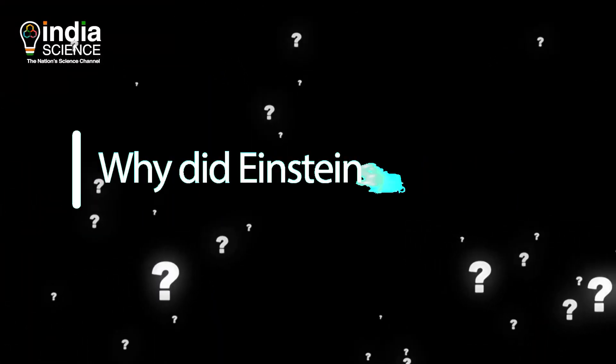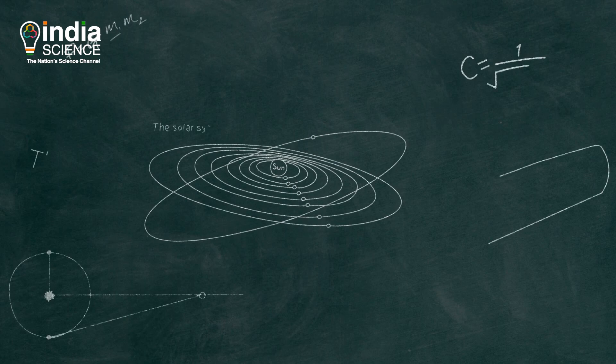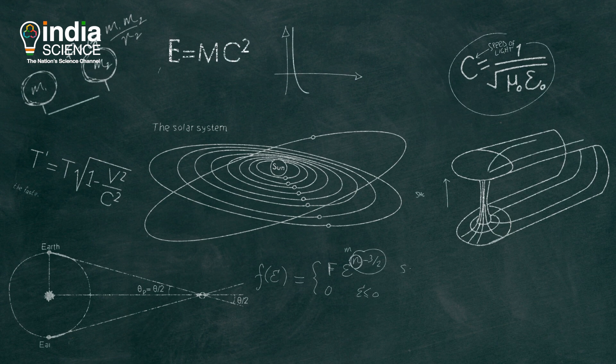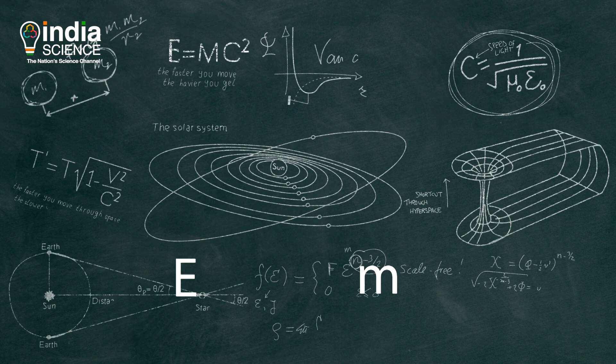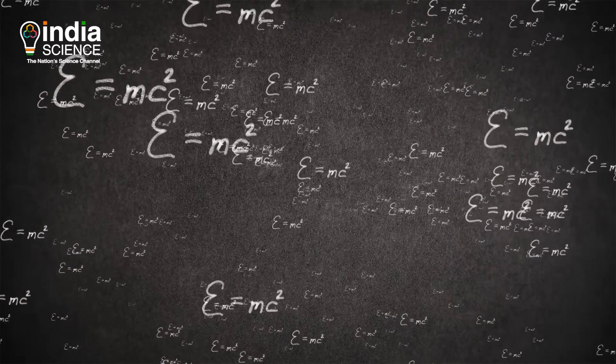But why did Einstein say that? Before Einstein's special theory of relativity, mass and energy were treated as separate things, but Einstein tied them together forever through the simple yet fundamental equation E=mc². This little equation predicts that nothing with mass can move as fast as light or faster.